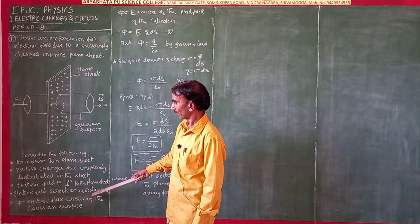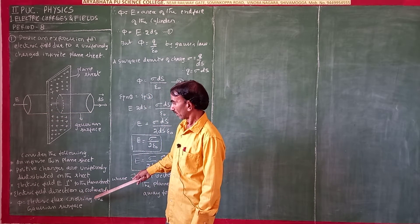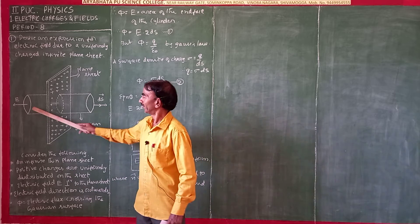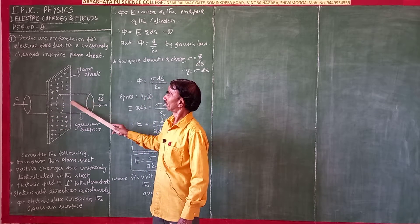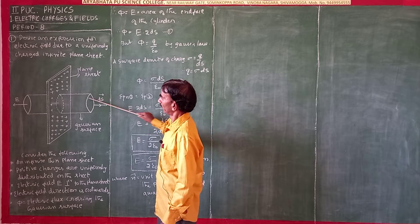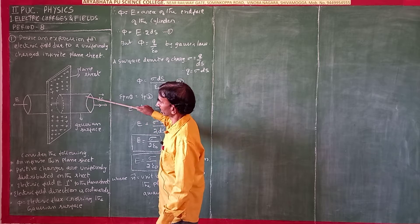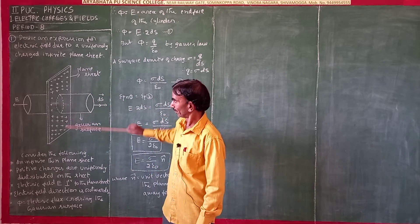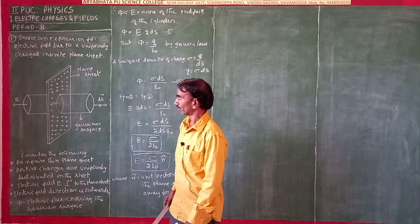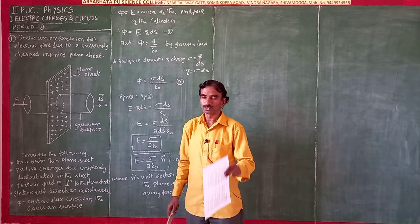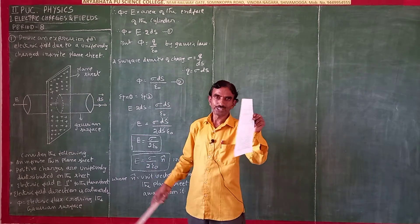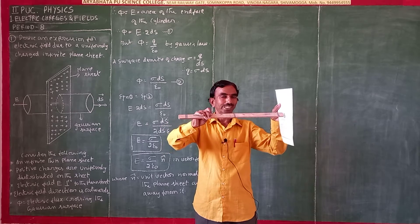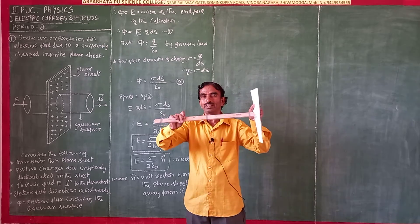The electric flux crossing the Gaussian surface is phi. In this crossing section, the electric flux is crossing in this direction through this small area. The electric field is in this direction — that is, perpendicular to this sheet.